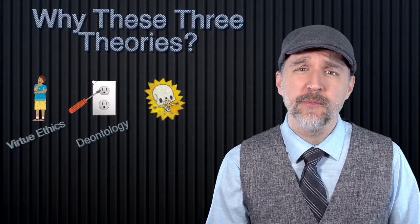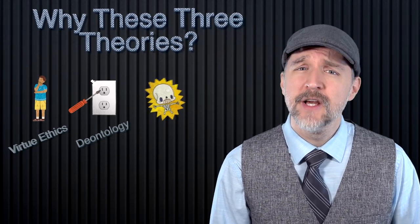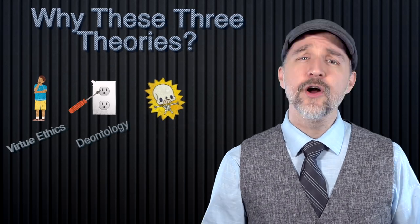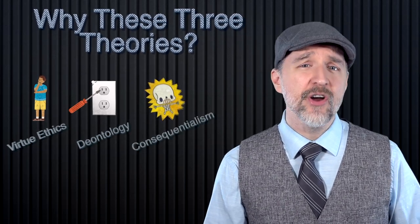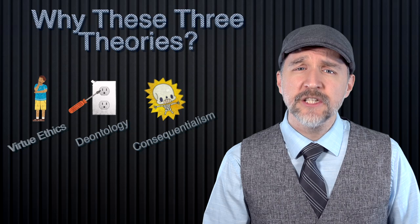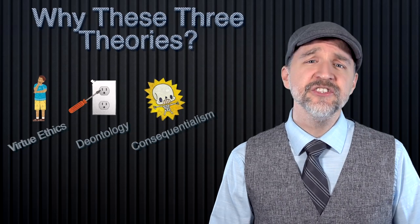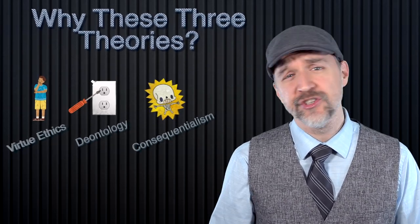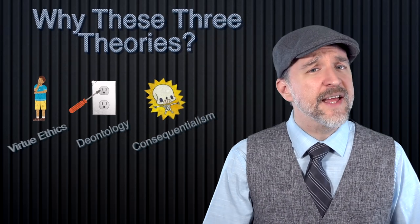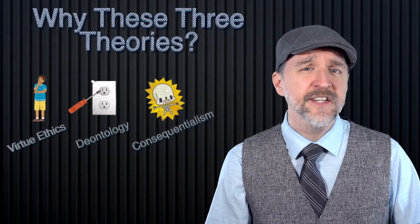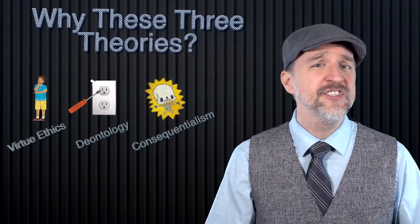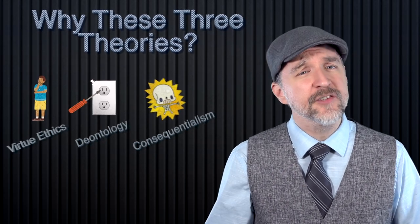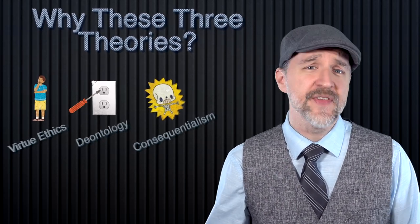Likewise, we have a duty or obligation to avoid certain actions because those actions are wrong in and of themselves. Consequentialism focuses on the outcomes of acts. Like deontology, consequentialism tells us which acts we should do and which acts we should avoid. However, unlike deontology, consequentialism doesn't view acts as intrinsically right or wrong. Instead, acts are right or wrong based on the outcome that they produce.